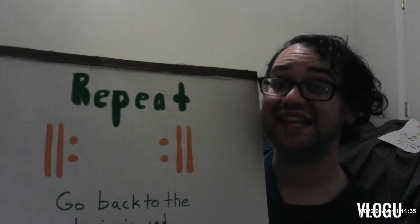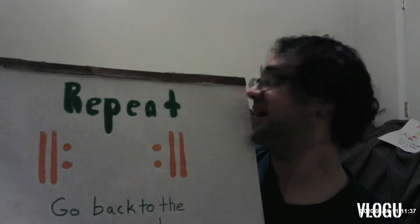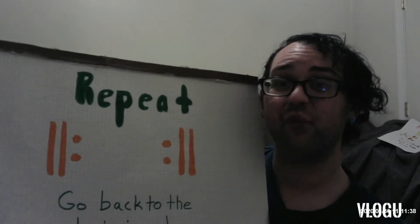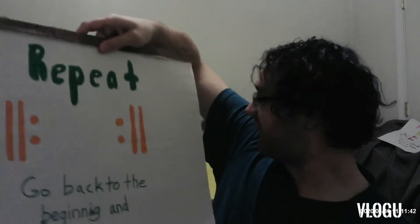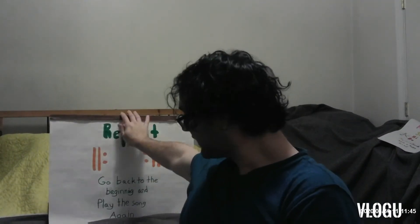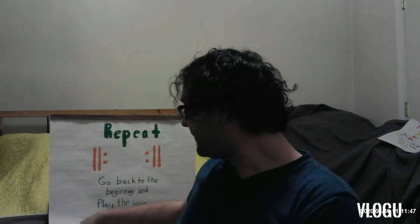We see it a lot in many songs we use. In fact, I have one song where we see it a whole bunch of times. Have you guys ever heard of Brother John? You know the song? Are you sleeping? Are you sleeping? Brother John? Brother John? Morning bells are ringing. Morning bells are ringing. Ding ding dong. Ding ding dong. Well, you see we use the repeat sign — take a look.